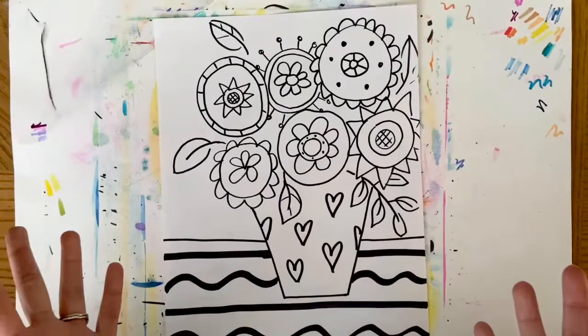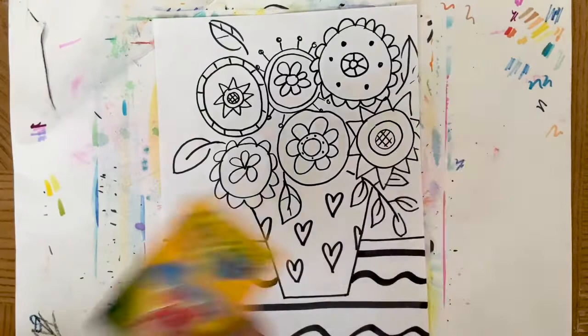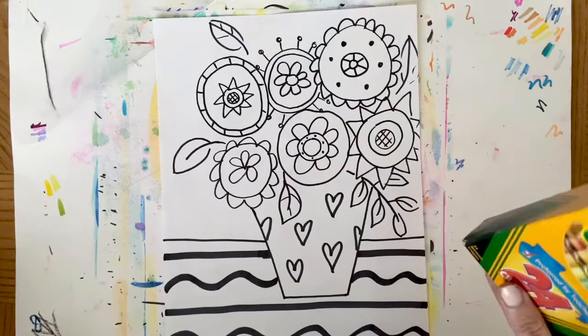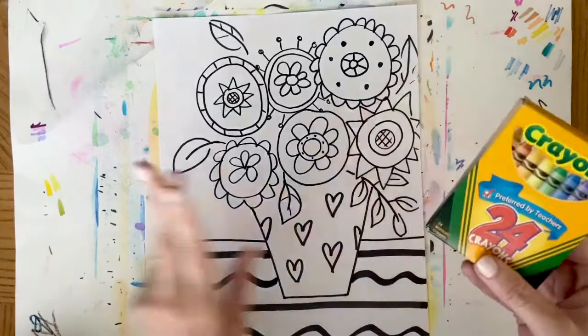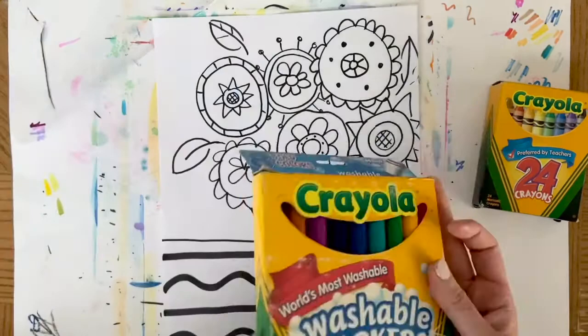The last thing you need to do is add color. And you can use whatever you like to add color. You can use crayons, markers, paint, or a mixture of both. I'm going to show you a mixture of both. What I'm going to do is I'm going to use my crayons to add some little detail designs in, and then I'm going to go over it with some markers and some paint.